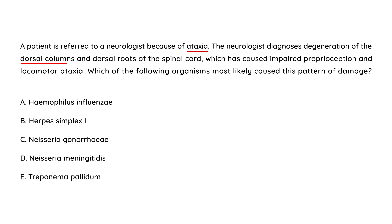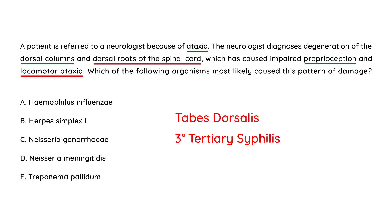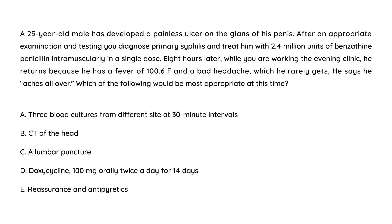Clinical vignette 2: A patient is referred to a neurologist for ataxia. The neurologist diagnoses degeneration of the dorsal columns and dorsal roots of the spinal cord, causing impaired proprioception and locomotor ataxia. This is tabes dorsalis, which is part of tertiary syphilis that can occur years later if untreated. The organism causing this is Treponema pallidum.